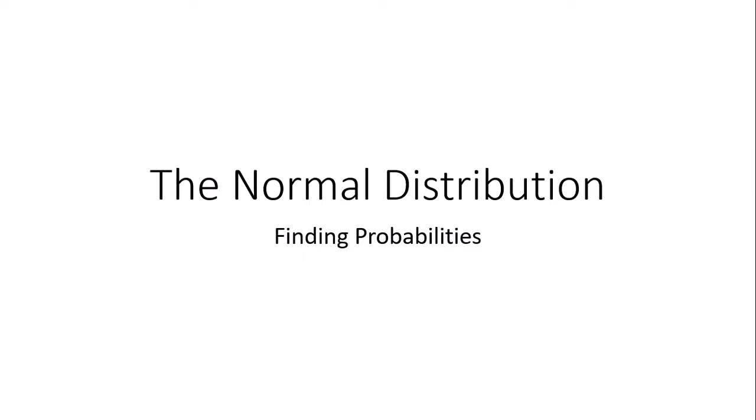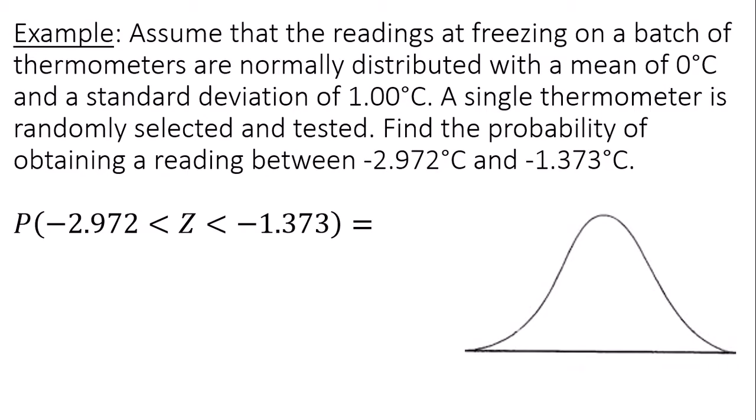This is a video on finding probabilities using the normal distribution. Assume that the readings at freezing on a batch of thermometers are normally distributed with a mean of zero degrees Celsius and a standard deviation of one degree Celsius. If we randomly select a thermometer, find the probability it will read between negative 2.972 degrees Celsius and negative 1.373 degrees Celsius.